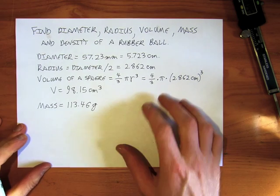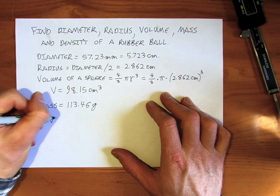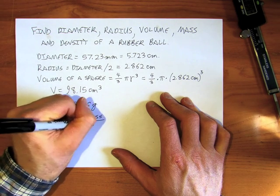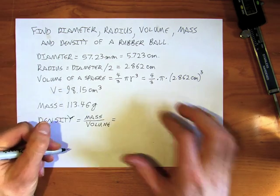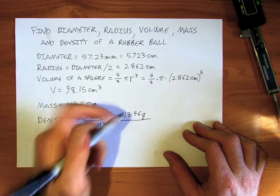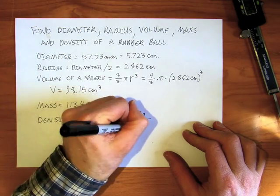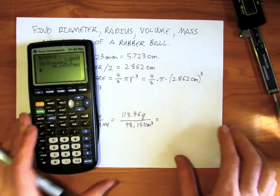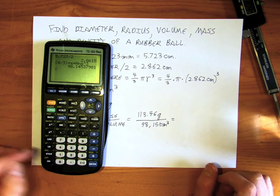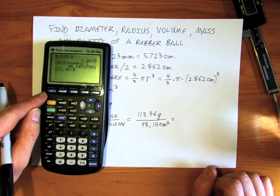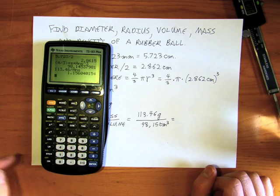And finally, I'm going to find the density. Density is mass over volume, so it's going to be 113.46 grams over 98.15 centimeters cubed. I go 113.46 divided by my answer and I get 1.16 grams per centimeter cubed.